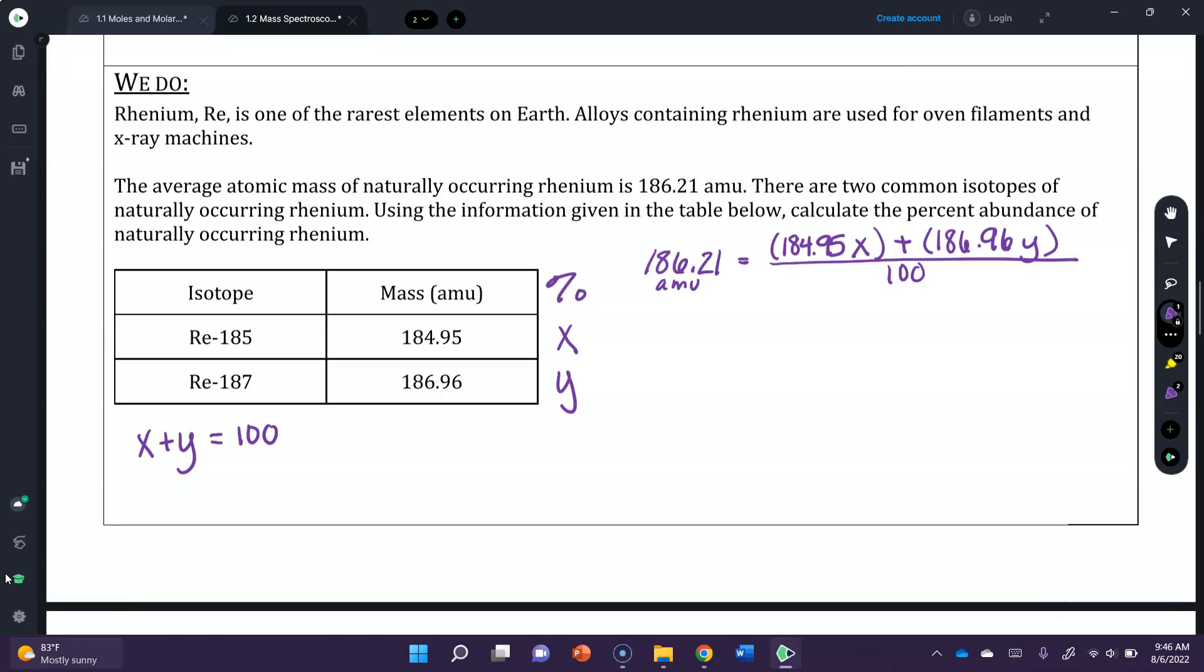Okay, so because I have two equations that both contain x and y, I can solve for one, and I can do it here. I can say that y is equal to 100 minus x, because I subtract x from both sides, and I can plug it in for the y here so that I have one equation with one, only one variable. So 186.21 is equal to 184.95x plus 186.96 times (100 minus x) all over 100. Okay. So yes, this is going to be a little bit long, and it's going to be a little bit tricky. I'm going to ask that you please press pause and try this yourself first, and then resume the video to check your work.